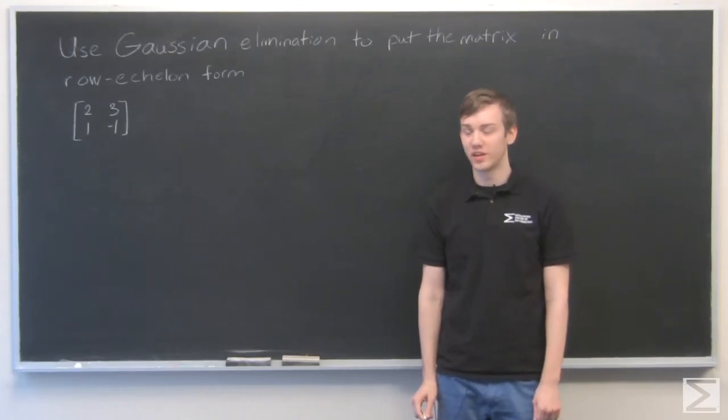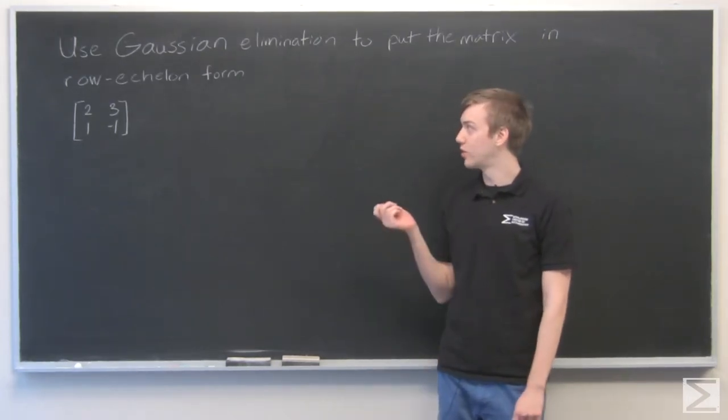For this problem, we're going to use Gaussian elimination to put the matrix in row echelon form.